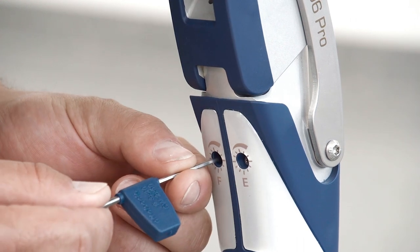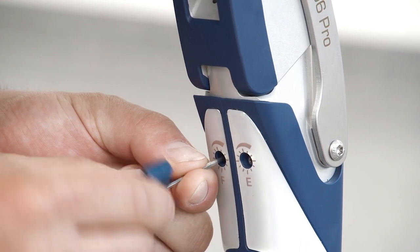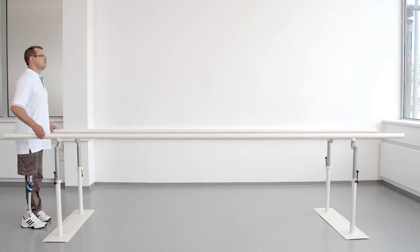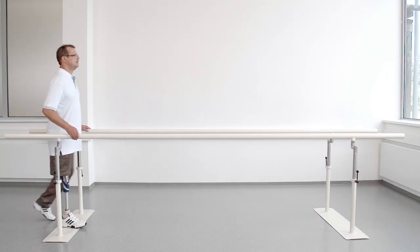At this point, the flexion damping is shown at its minimum. At higher walking speeds, the user has to wait too long for the prosthesis to reach full extension at heel strike.